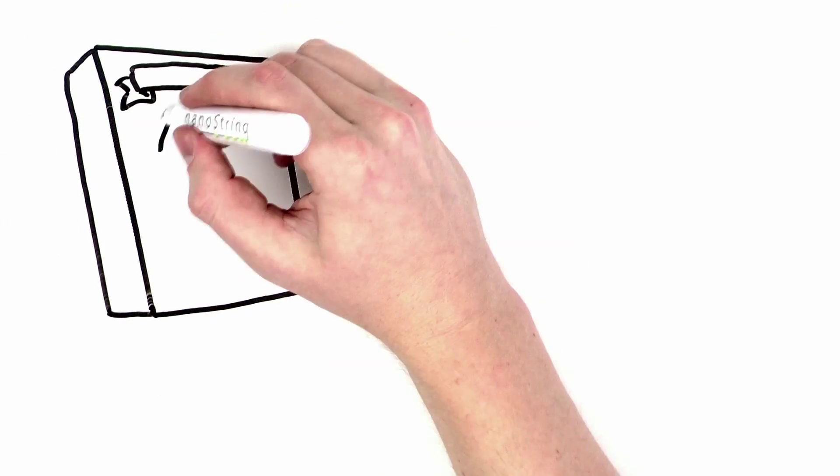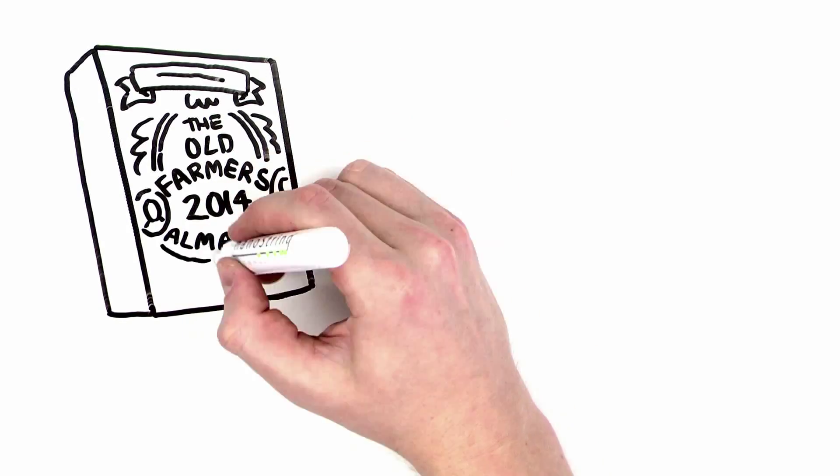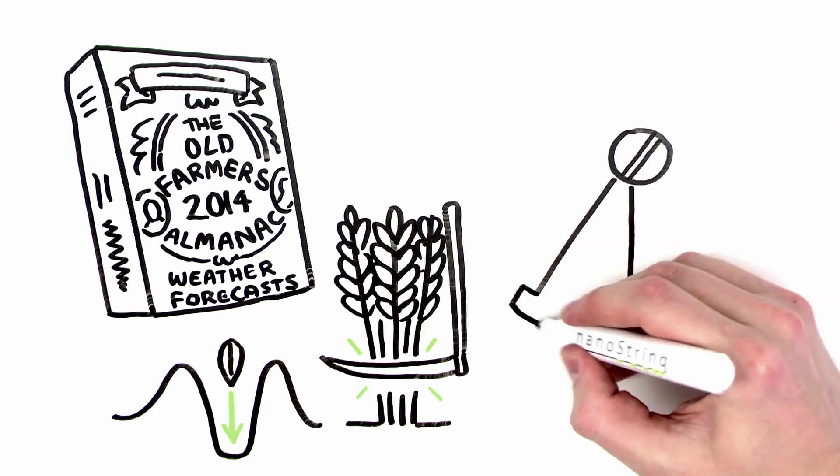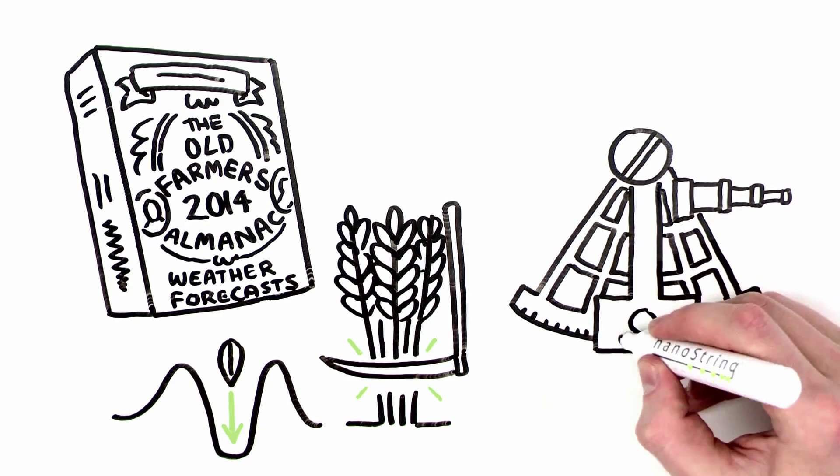And it was these constellations that allowed our ancestors to more accurately predict when to plant, when to harvest, and most importantly, how to navigate.